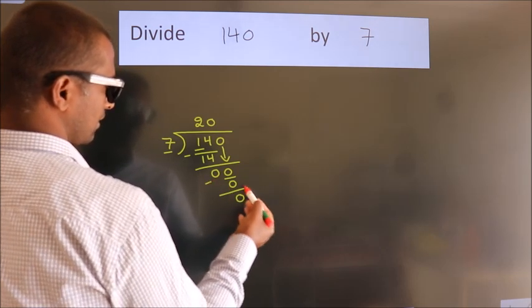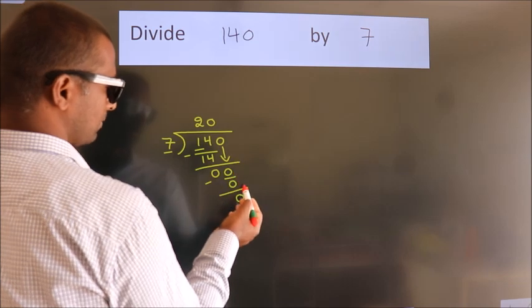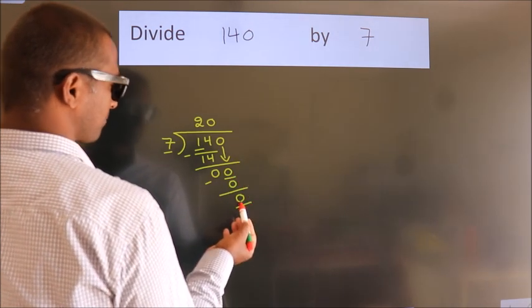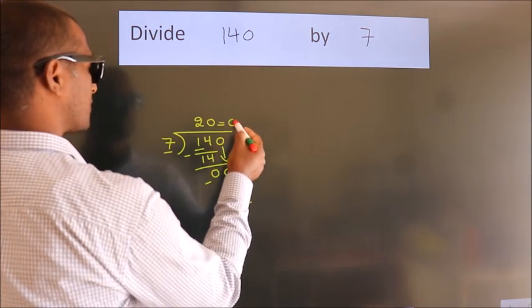After this, no more numbers to bring down, and we got remainder 0. So this is our quotient.